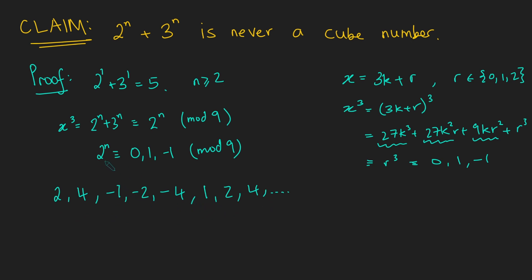And so if we want 2 to the n to be either 0, 1, or minus 1, well, looking at this list here, there's no chance it will be 0. But it could be 1 or minus 1, because those both occur in the list. Well, where do they occur? They occur at every third term. So every third term we get minus 1, then 1, then minus 1, then 1, and so on.